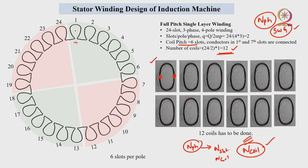The slot opening width is 2 to 5 times the conductor cross-sectional area. So 2 or 3 conductors at a time with respect to each coil, we have to insert into the slots one by one.